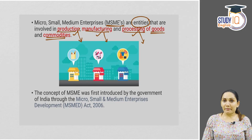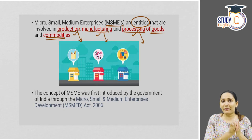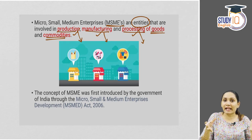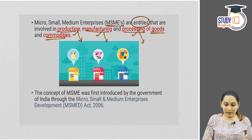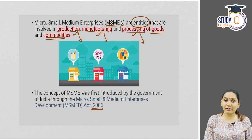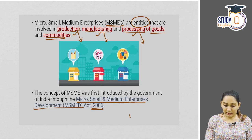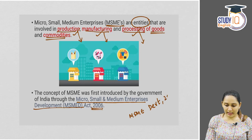The concept of MSME was introduced to categorize micro, small and medium enterprises into a separate category from the general category of industries. This was first done in 2006. The very first time the concept of MSME was introduced by the Government of India was through the Micro, Small and Medium Enterprises Development Act of 2006.